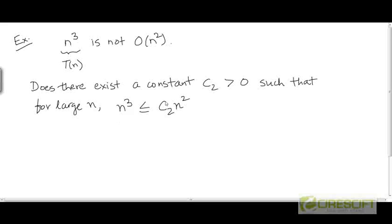So does there exist any constant c₂ such that this inequality holds for large n? The answer is no, because for n³ to be less than or equal to c₂ times n² for very large values of n